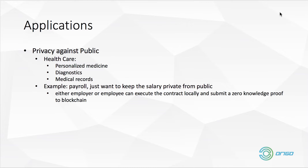For example, for payroll, you just want to keep the salary private from the public — for your company it's okay. By this case, either the employer or the employee can actually execute this contract locally and submit a zero-knowledge proof to the blockchain. You do actually keep the information private, but they can verify the result using the zero-knowledge proof you give to the blockchain. This simplifies the protocol and increases the security a lot. This kind of optimization is suitable for privacy against the public.